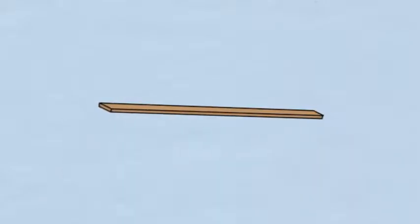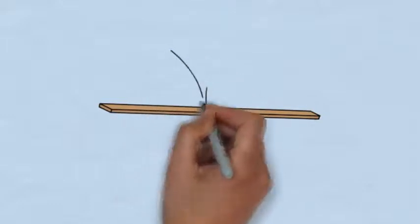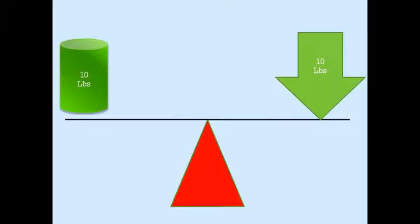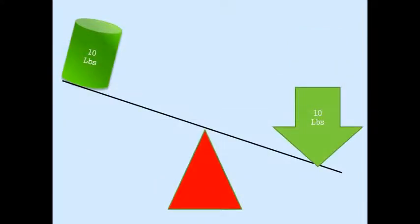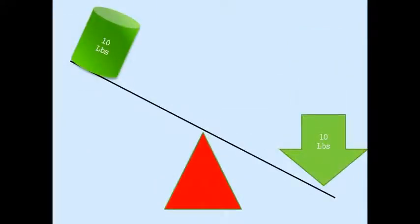Here's the surprising part. Your back is like a seesaw but not a normal one. A normal seesaw has the pivot point in the center. With this kind of seesaw it only takes 10 pounds of pressure to lift a 10 pound object.